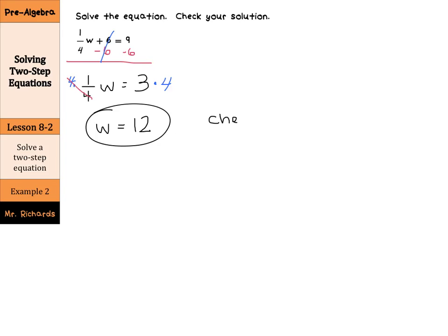And again, as we go to our check step, rewrite the original equation 1 fourth w plus 6 equals 9. Substitute in 12 for w, and if you wanted to write a 12 over 1, you certainly could. And 1 fourth times 12 is 3. And 3 plus 6 does simplify to be 9. 9 equals 9, so w equals 12 is our correct solution.